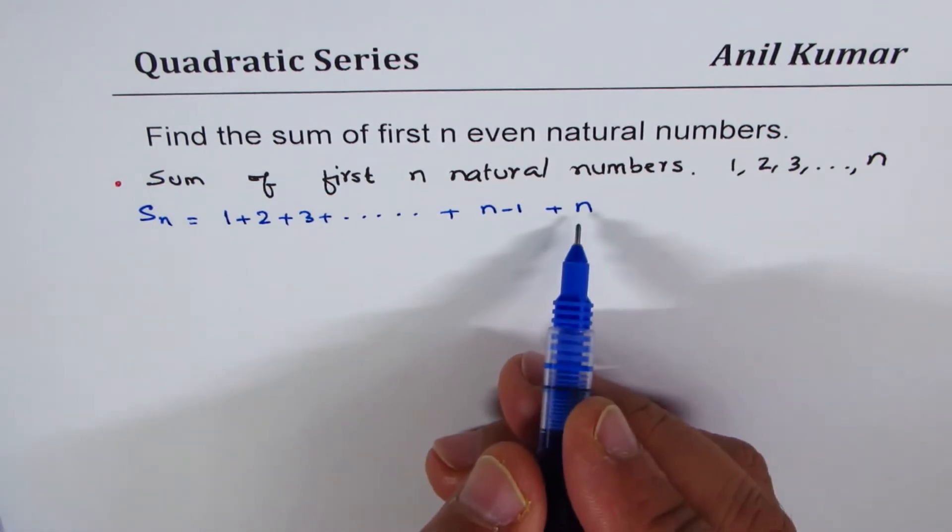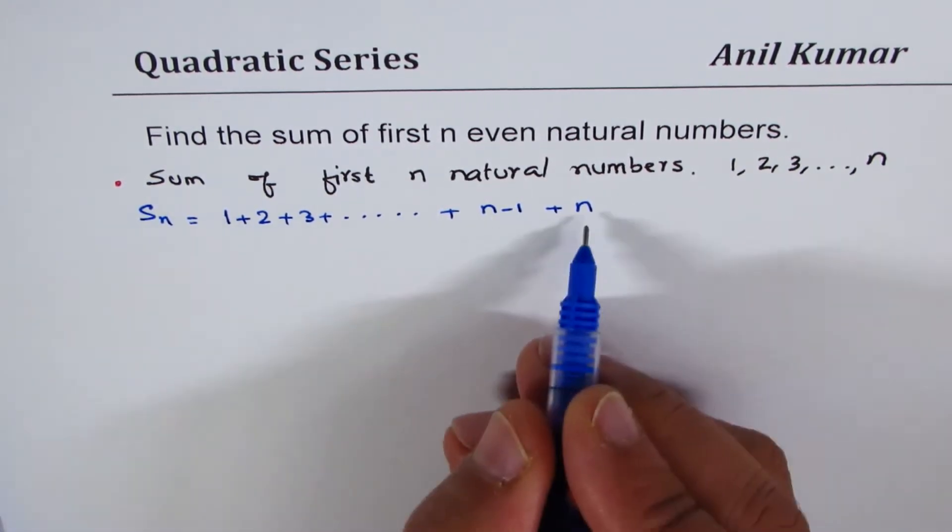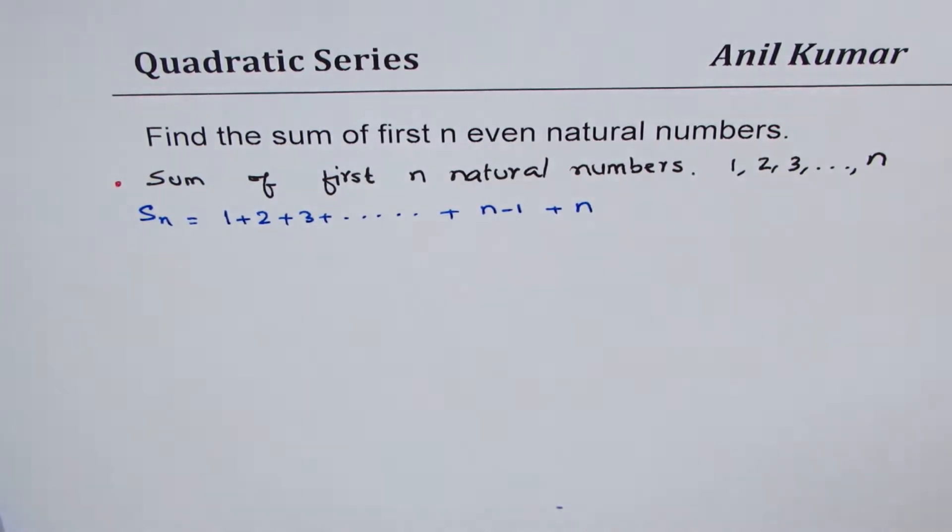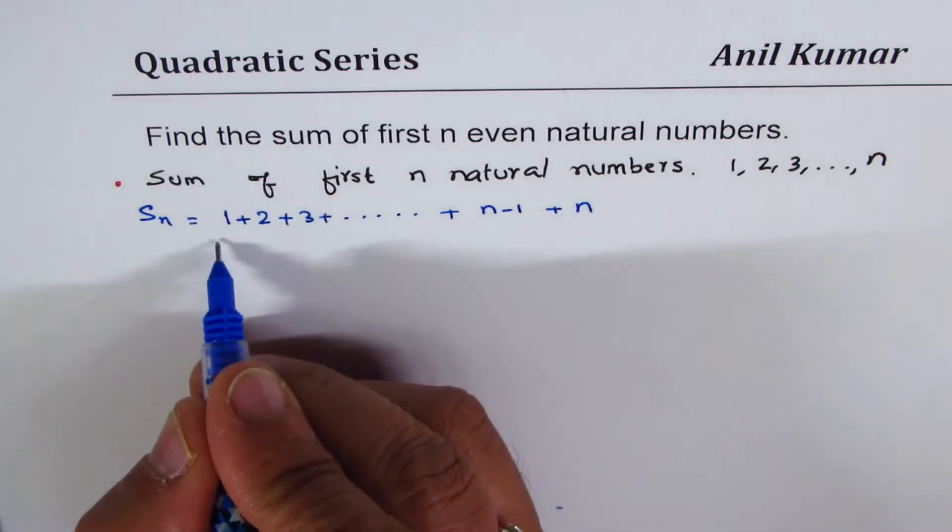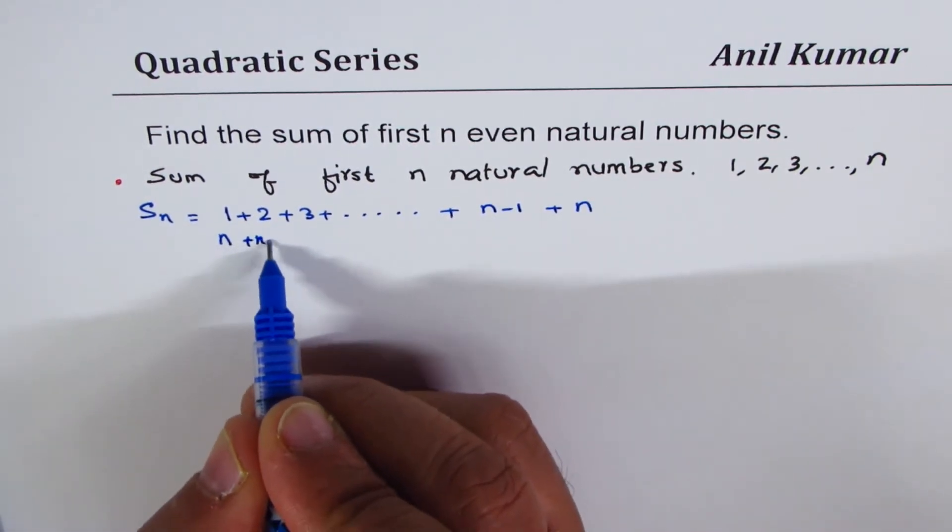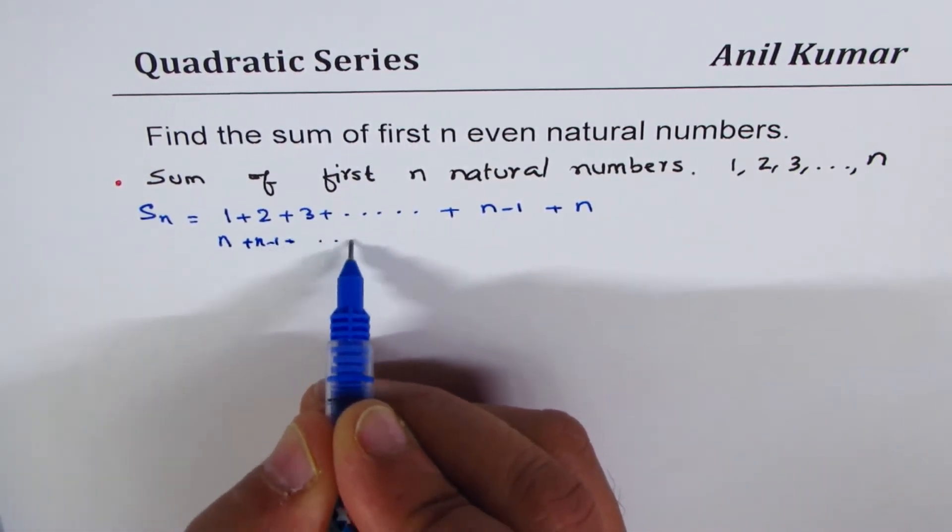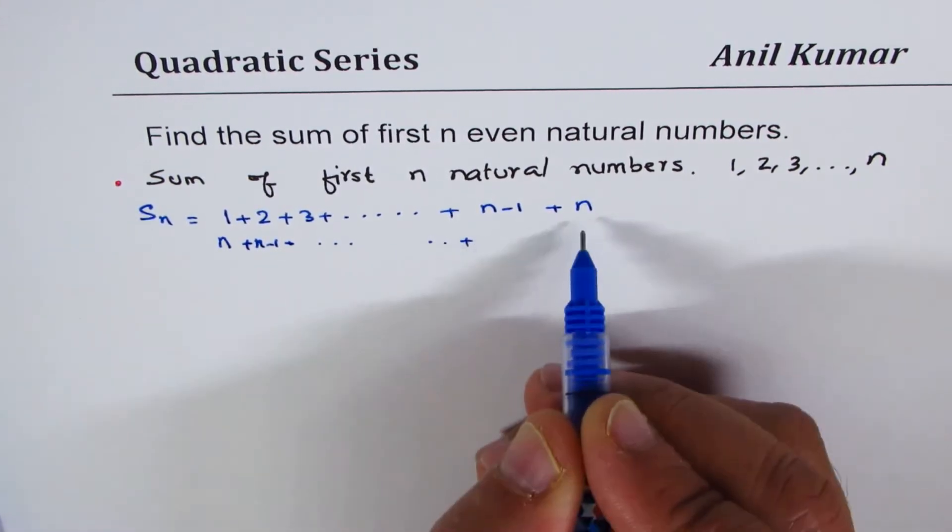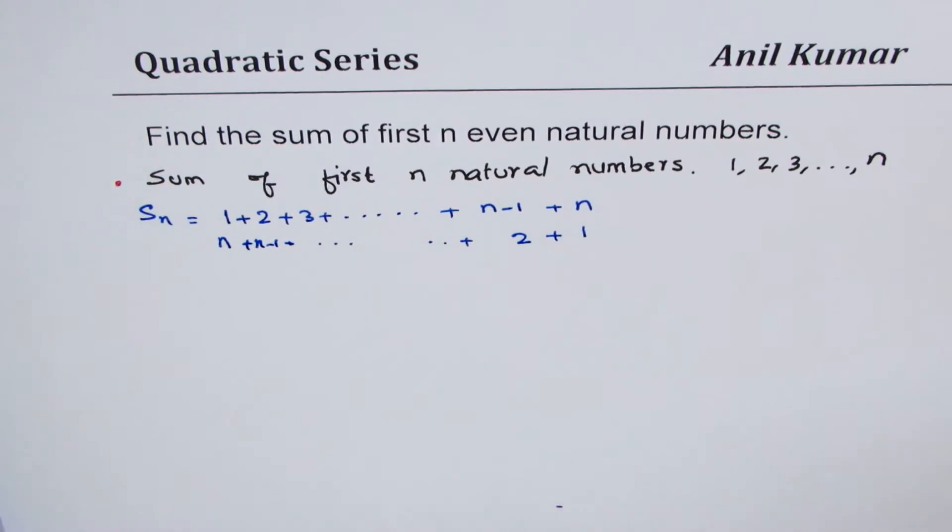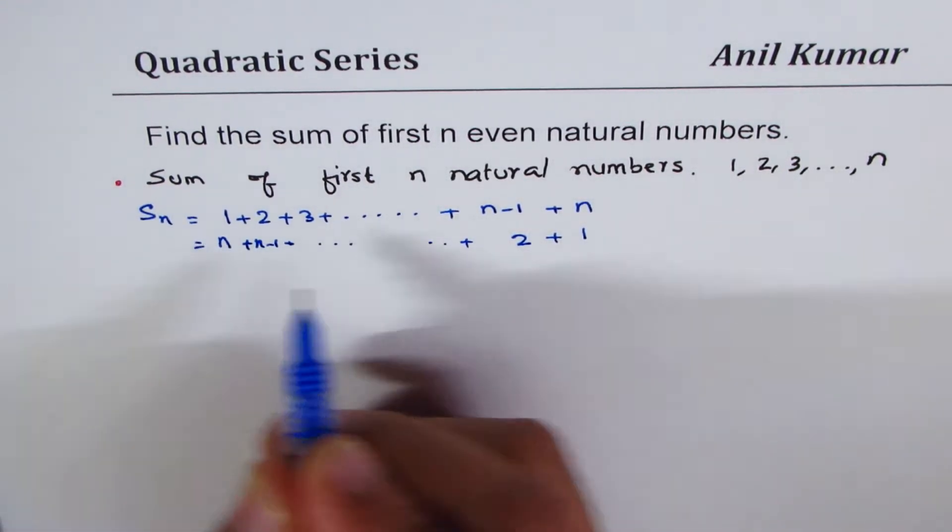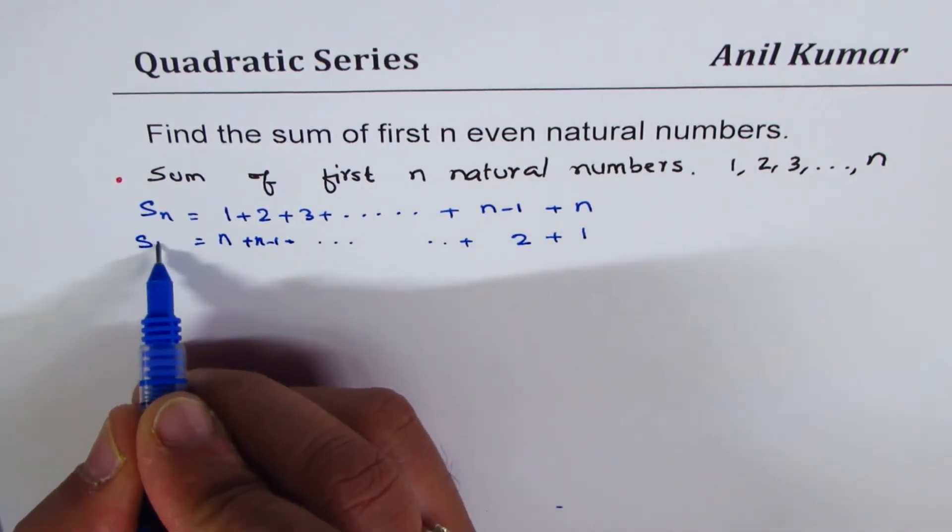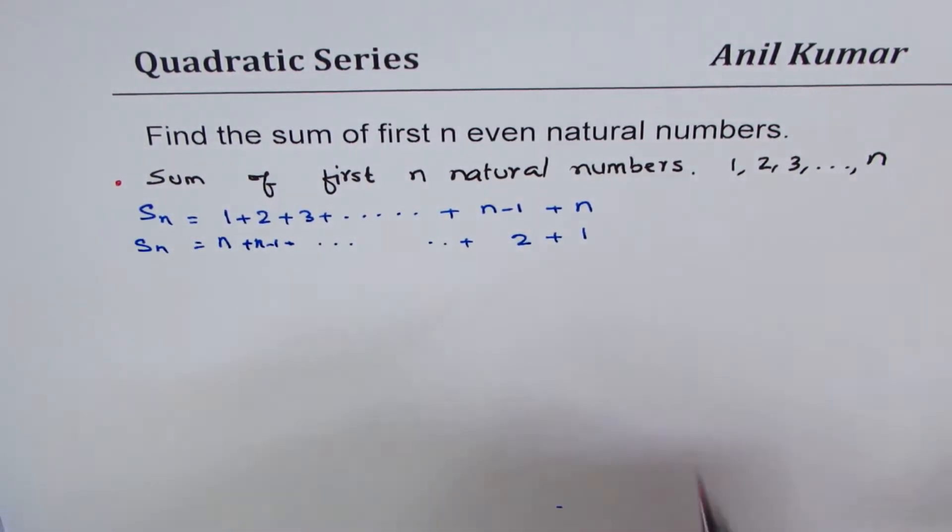I could write this series in the reverse direction. I could write this as n first. So, if I write n first, look at what I get. I get n here and then n minus one. So, plus n minus one plus so on. So, at the end, we'll get two and one. Now, sum of both is same. So, I can say sum of the second series is also Sn. So, we have two series now.